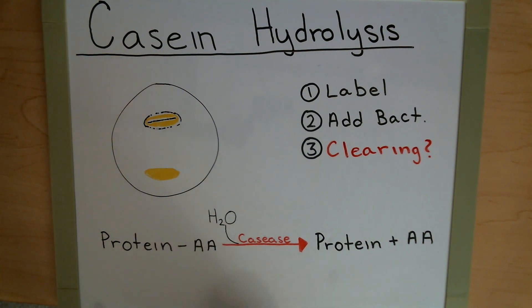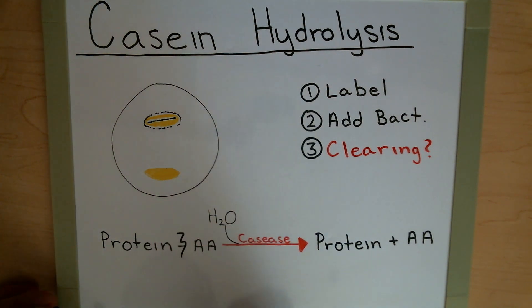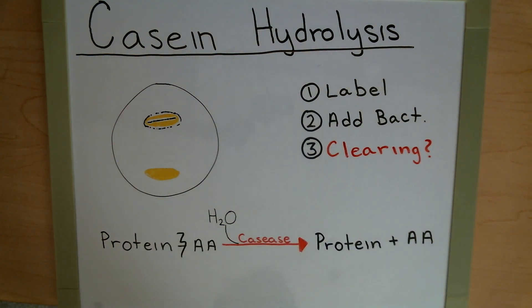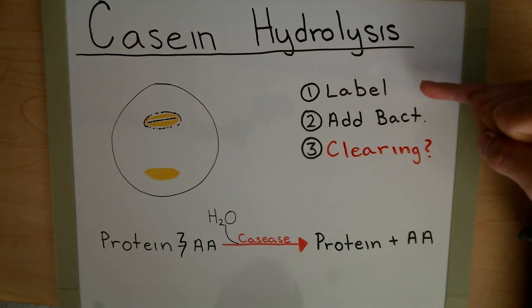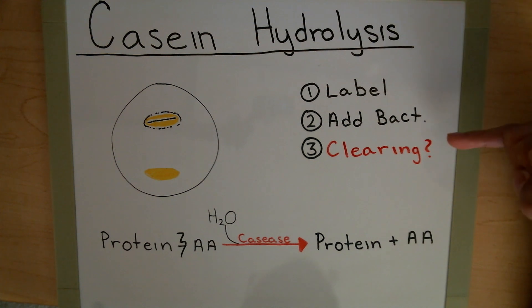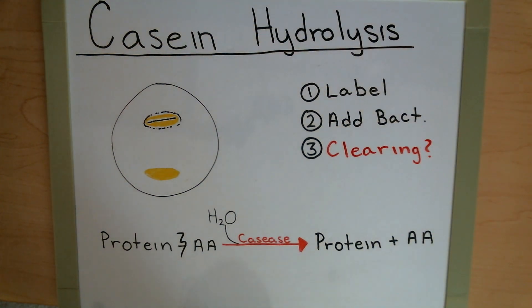The protein can be represented as amino acids with individual bonds to each other, and an accumulation of those makes up a protein. Casease breaks up these individual amino acid bonds, giving us a single amino acid, which allows the bacteria to have an amino acid resource. The first thing we're going to do is label our plates so we know which bacteria is which. After we incubate, we're going to be looking for a clearing — unlike starch hydrolysis, we don't need to add iodine for this one.